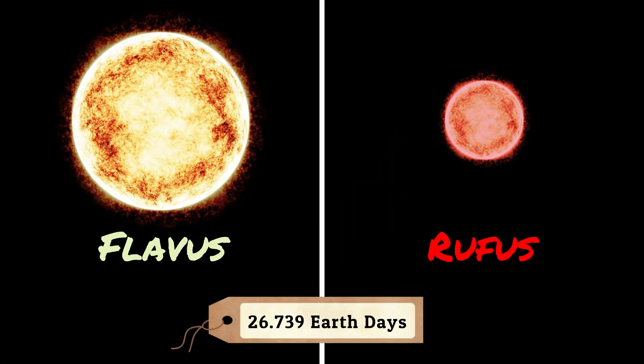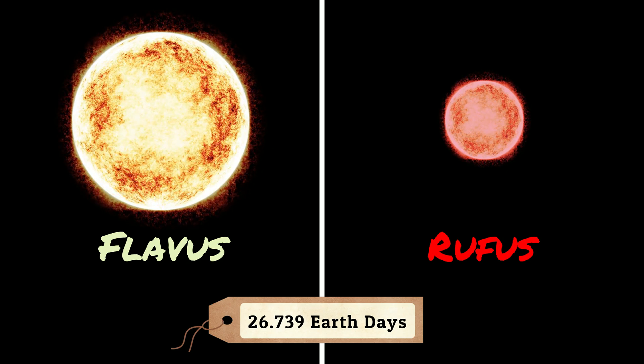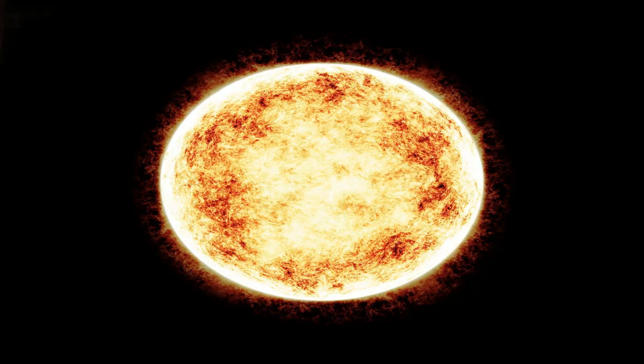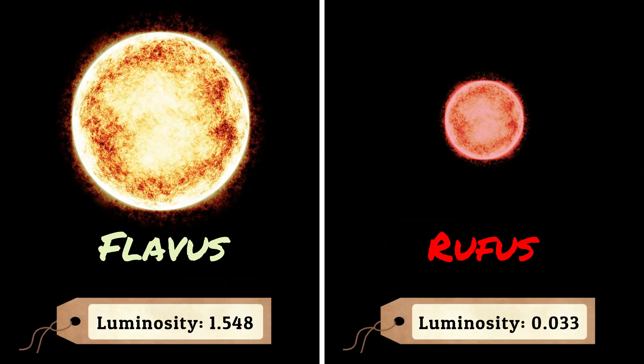Considering that the two stars are orbiting so close to each other, and that one is about twice as large as the other, to someone viewing the stars from the distance of the habitable zone, they're likely to just look like one oval-shaped star. Maybe at the point of their rotation where they're viewed side by side, Rufus might be visible separately to Flavus, but given the much greater luminosity of Flavus and the distance of the viewer, without special equipment it's probable that on most days Rufus wouldn't be able to be seen separately at all — despite being half Flavus' size, Rufus is only about 1.5% as luminous.